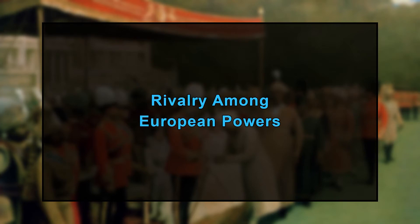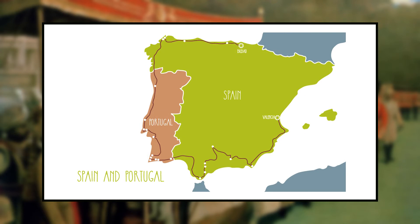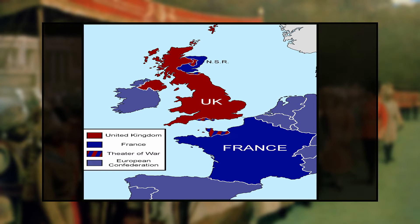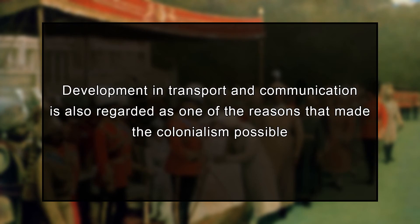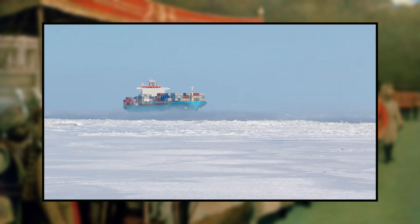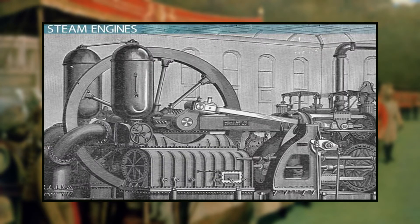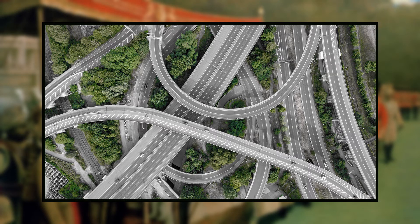Third, rivalry among European powers: initially only Portugal and Spain pursued territorial expansion, but France and England soon joined this race in search of raw materials and markets. Acquiring new colonies became a symbol of pride, leading to competitive colonization. Development of technology — particularly in transport and communication — also made colonialism possible. Navigation through sea routes using new technology like the compass, the steam engine, and road infrastructure made the process of colonization easily achievable, giving colonial powers a significant advantage over colonized lands.